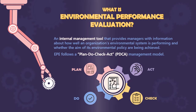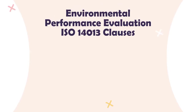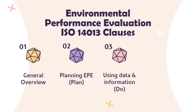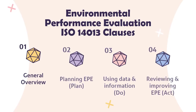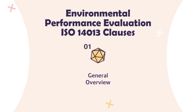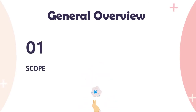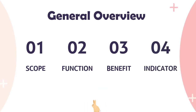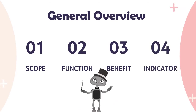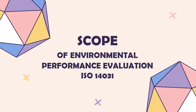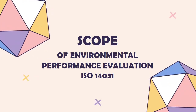Under ISO 14031, there are four classes: general overview, planning EPE, using data and information, and reviewing and improving EPE. In this video, we will be discovering the first class. The first class, General Overview, includes the scope, function, benefits, and indicators of ISO 14031.